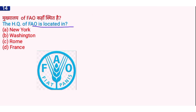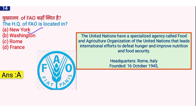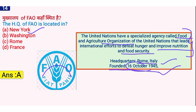The headquarters of FAO is located where? FAO stands for Food and Agricultural Organization. It is a United Nations specialized agency that leads international efforts to defeat hunger and improve nutrition and food security. Its headquarters is located in Rome, Italy. Its formation was on 16 October 1945, and World Food Day is celebrated every year.